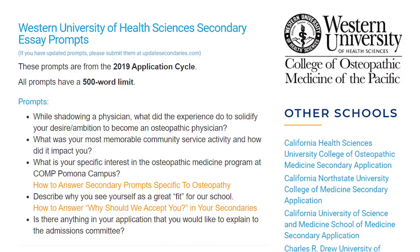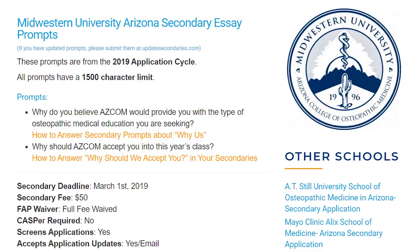Pulling up the Western University of Health Sciences secondary essay from the 2019 application cycle, it asks: 'While shadowing a physician, what did the experience do to solidify your desire or ambition to become an osteopathic physician?' That's your 'Why DO?' right there. Midwestern University Arizona Secondary Essay asks: 'Why do you believe that the Arizona College of Osteopathic Medicine would provide you with the type of osteopathic medical education you are seeking?' Again, an osteopathic-specific question — this is where you put your desires for osteopathic medicine, tailored to the school.